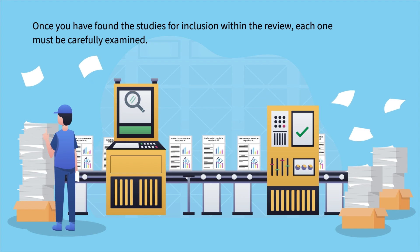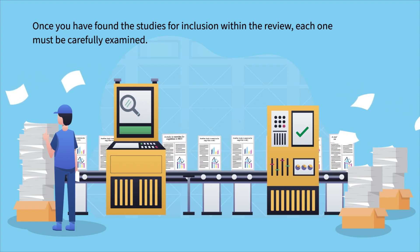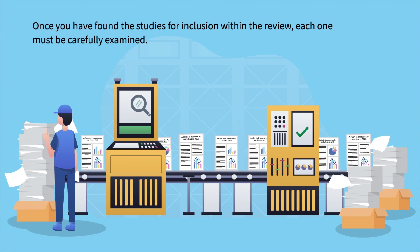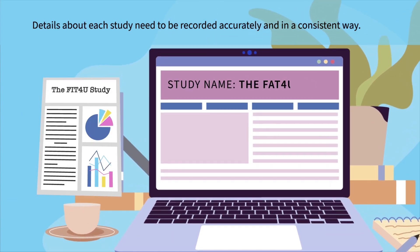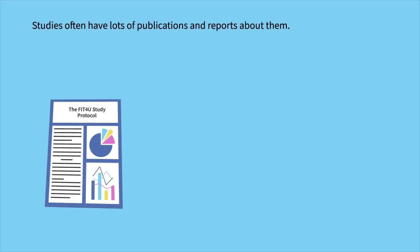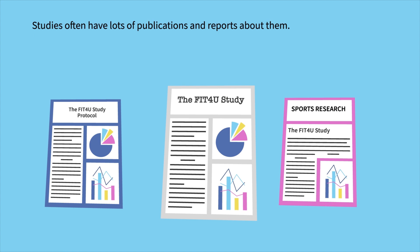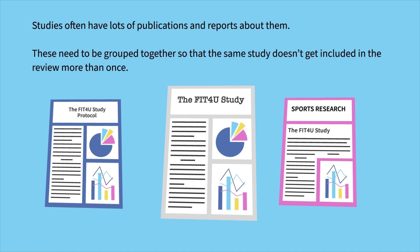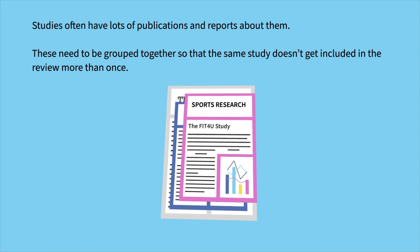Once you have found the studies for inclusion within the review, each one must be carefully examined. Details about each study need to be recorded accurately and in a consistent way. Studies often have lots of publications and reports about them. These need to be grouped together so that the same study does not get included in the review more than once.